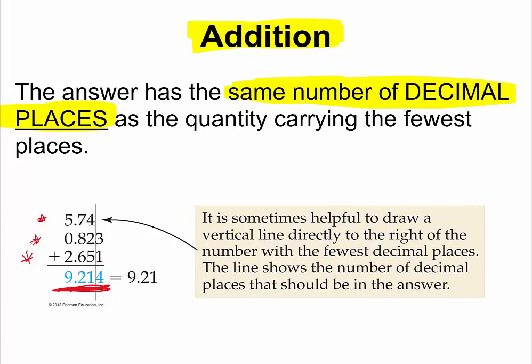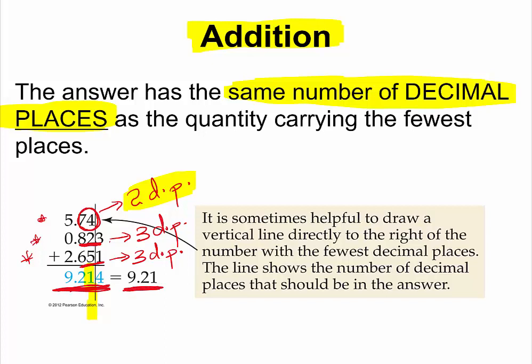The 5.74 measurement has 2 decimal places. The 0.823 measurement has 3 decimal places, and the 2.651 measurement has 3 decimal places. Since the answer must have the same number of decimal places as the measurement with the fewest decimal places, our final answer must only have 2 decimal places. Our final answer ends up as 9.21.